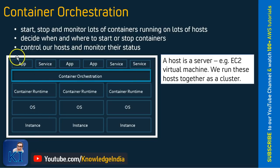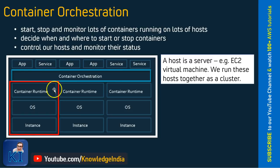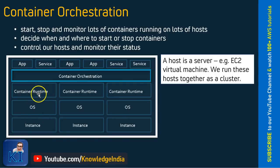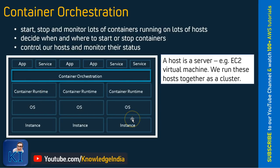As you can see on the left hand side in this picture, this particular vertical you can consider as one host or one EC2 instance. As you can see, there are three hosts available. Container orchestration service oversees all the available hosts — three in this case — and then decides where the next container should be placed.